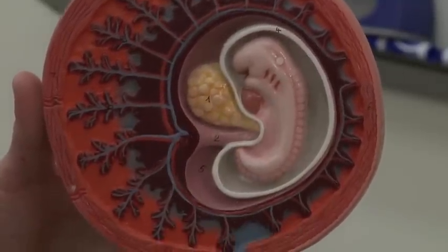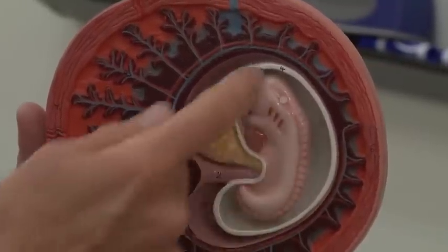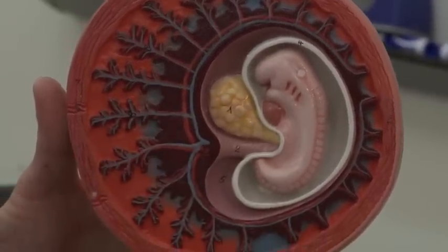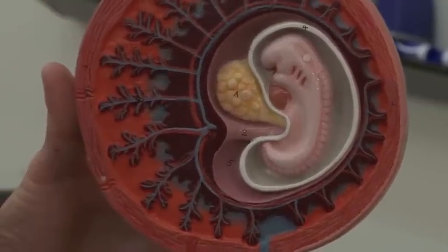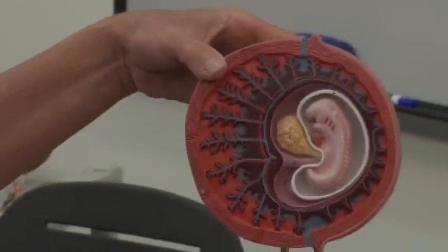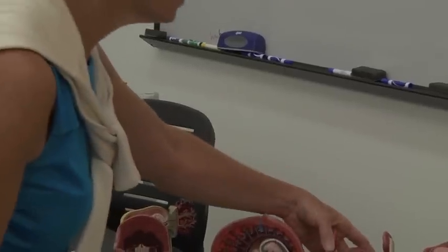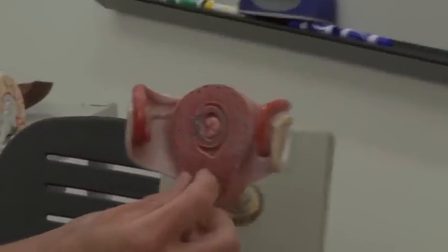When somebody says their water broke, that's that protective bag of water that surrounds the developing embryo there. Then there's your yolk sac. Your yolk sac is eventually going to push out and form part of the umbilical cord. That's not quite as important in humans as it would be in, say, a chicken or something like that. But as the embryo develops, you'll see that the amnion comes completely around the developing embryo. You've got your embryo in there and then it's got the amniotic sac surrounding that.